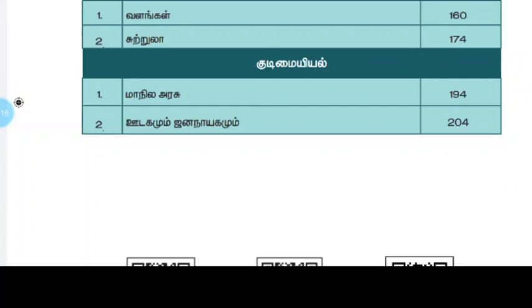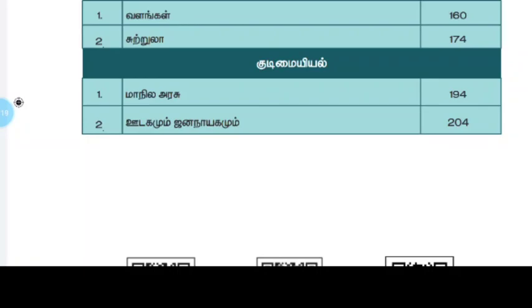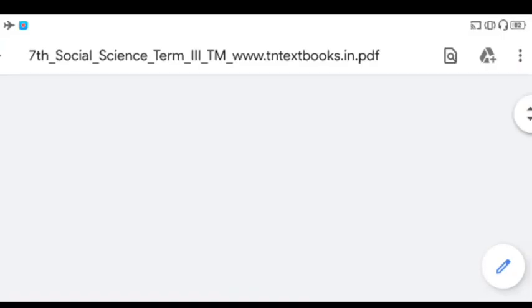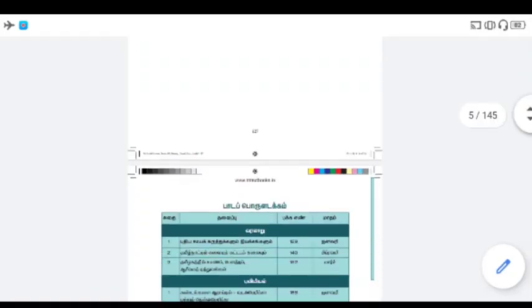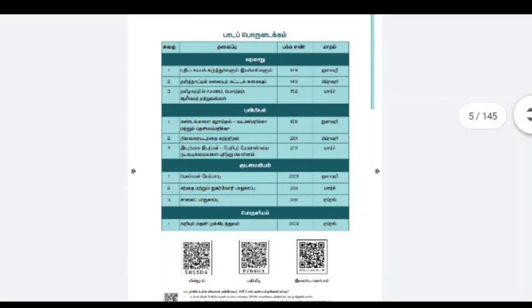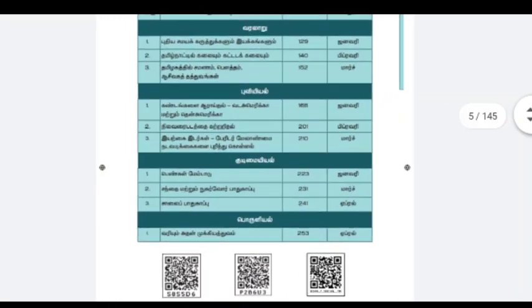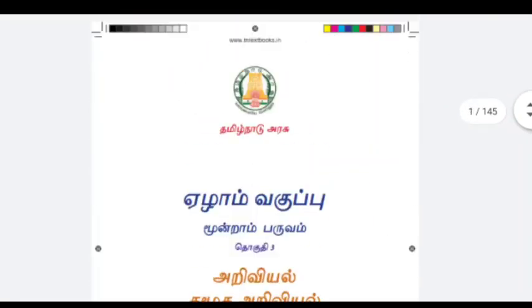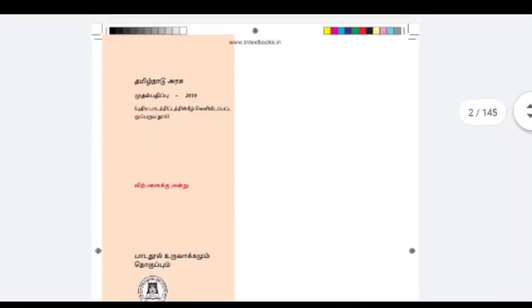If you look at the 6th, 7th, 8th, then you will learn the basic information. If you learn the 2 lessons, you will learn the 3rd lesson. If you look at the 3rd new book, you will learn the 3 lessons as possible.